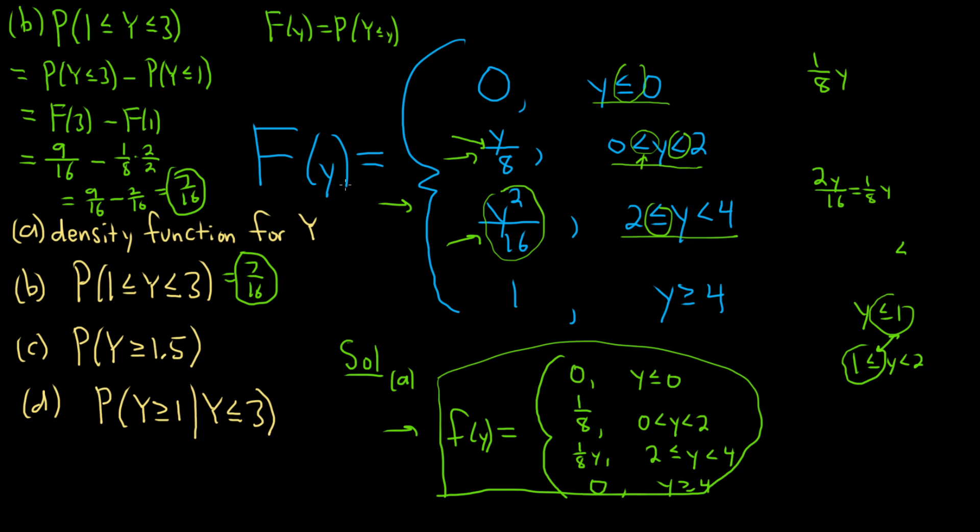For part C, so part C, we want the probability that big Y is greater than or equal to 1.5. So using just basic rules of probability, this is one minus the probability of the complement. That's the probability that Y is less than 1.5. Now this is the continuous distribution. So if it bothers you that the formula has an equal to here and it doesn't have one here, you can just put it there. Yes, you can, because the probability of equality is equal to zero in a continuous distribution. So you can just put it there. So the fact that it's less than 1.5 is the same as less than or equal to 1.5.